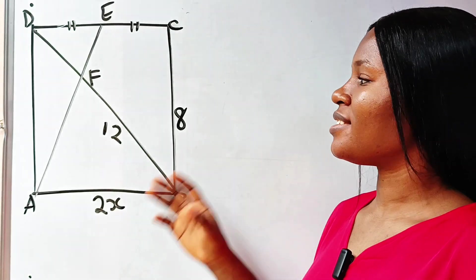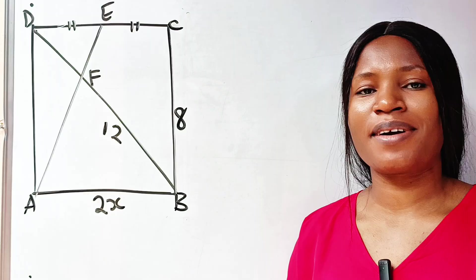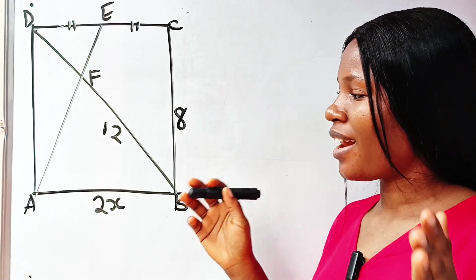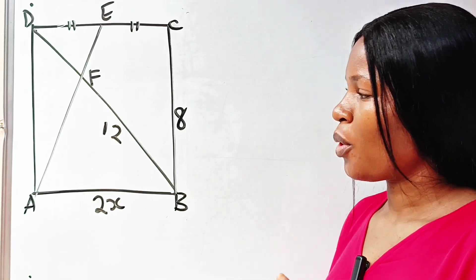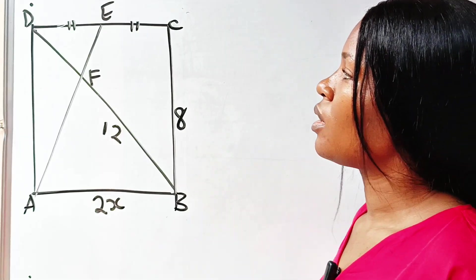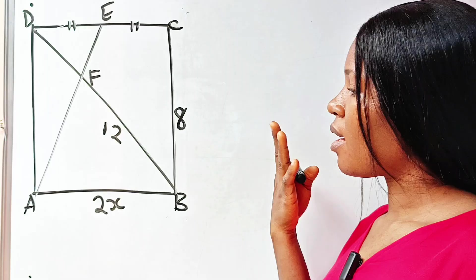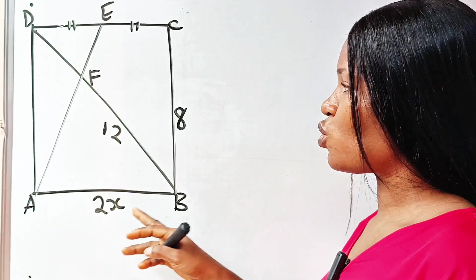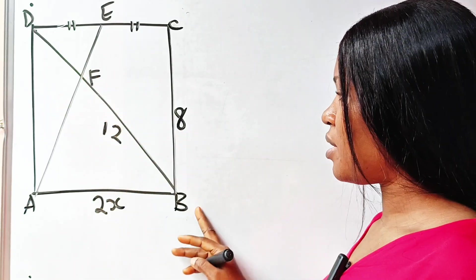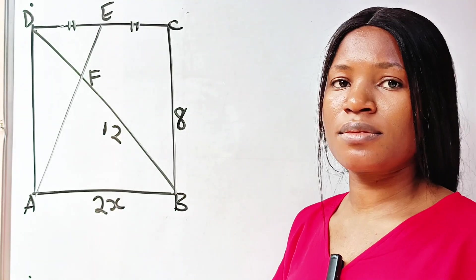Hi, can you find the value of x in this diagram? Welcome back to my channel. Let's get straight to the point without wasting time. The question says that we should find the value of x if AB is 2x, FB is 12, and CB is 8.